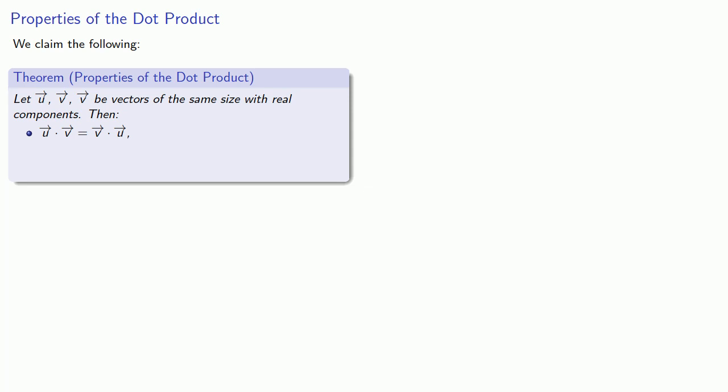For any real number a, a·u dotted with v is the same as a times the dot product of u and v. This is sometimes called associativity of scalar multiplication.